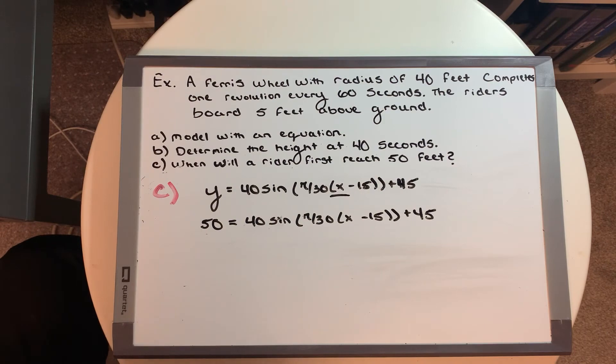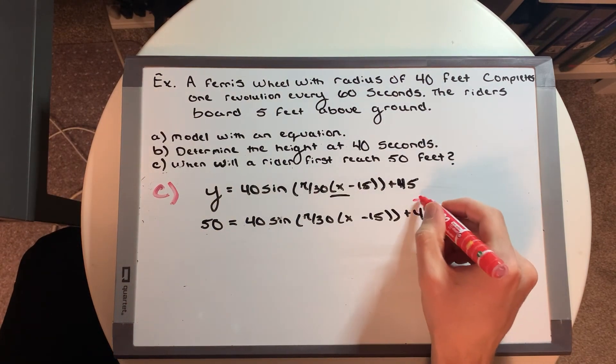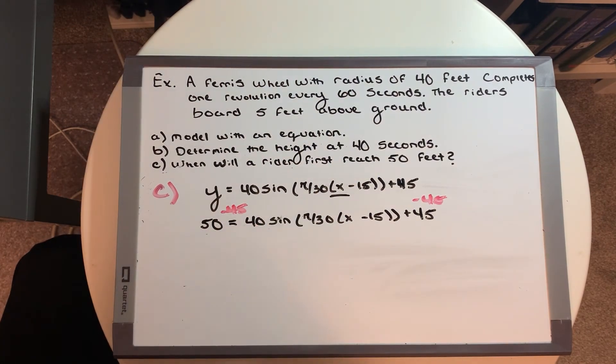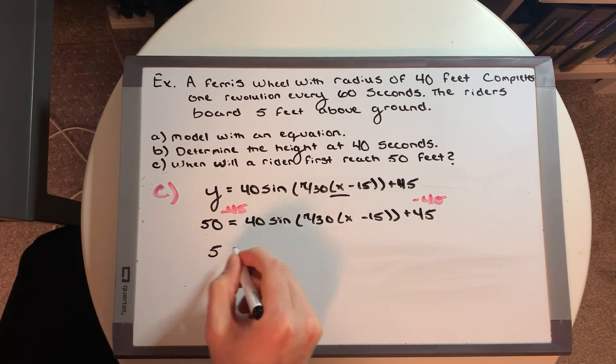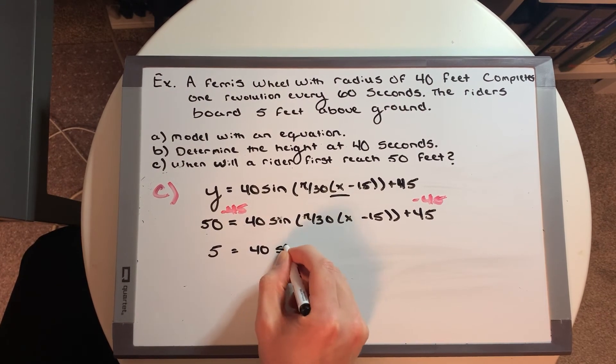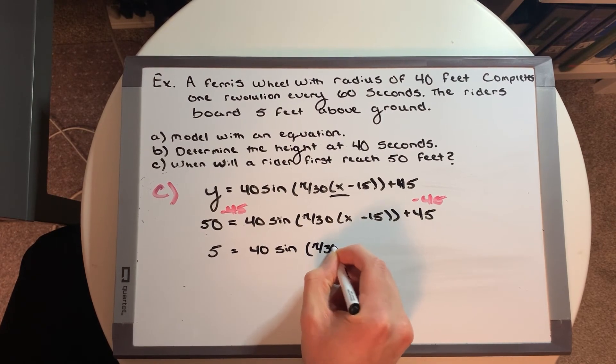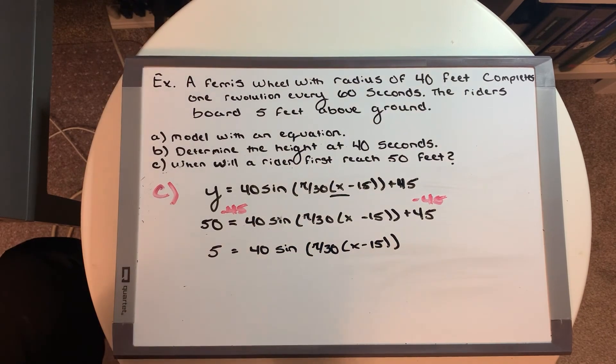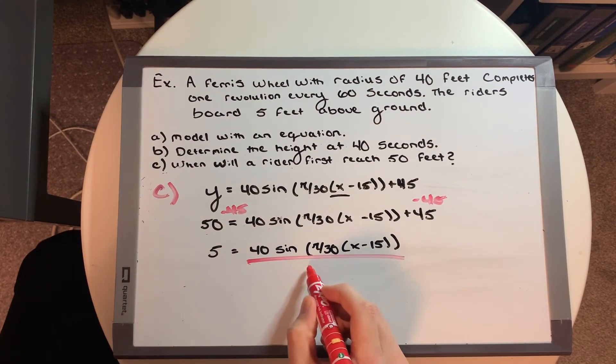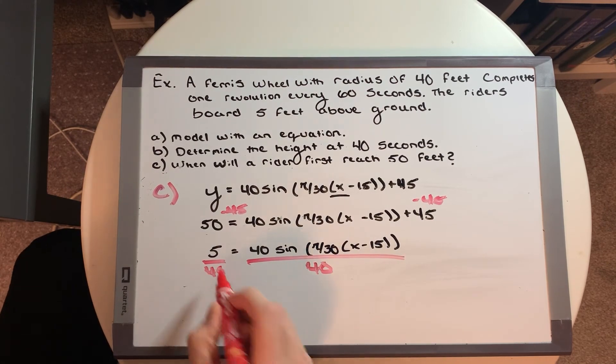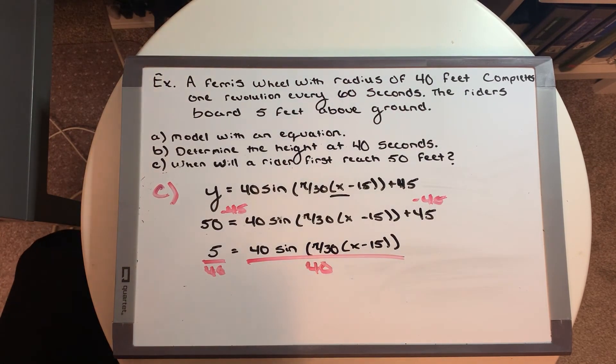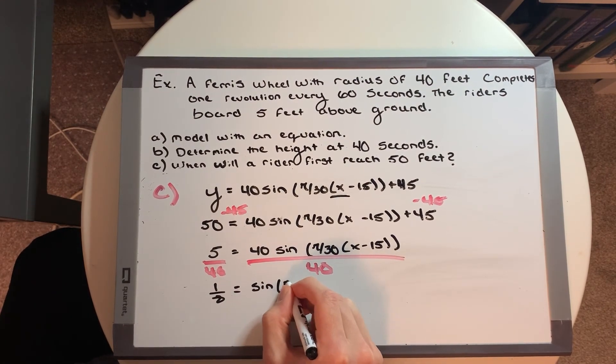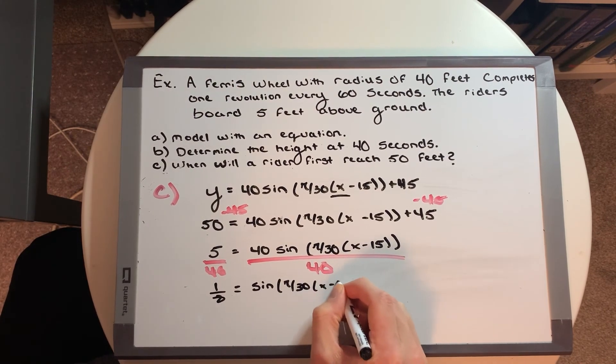So what we're going to first do is, we're going to take this 45 from this side, so minus 45, and bring it to this side as well, minus 45. Then we're going to rewrite our equation as we have 5 on this side is equal to 40 sine pi over 30, x minus 15. Okay, and then the next step in the solution would be divide by that 40. So we get 1/8 is equal to sine pi over 30, x minus 15. Okay.